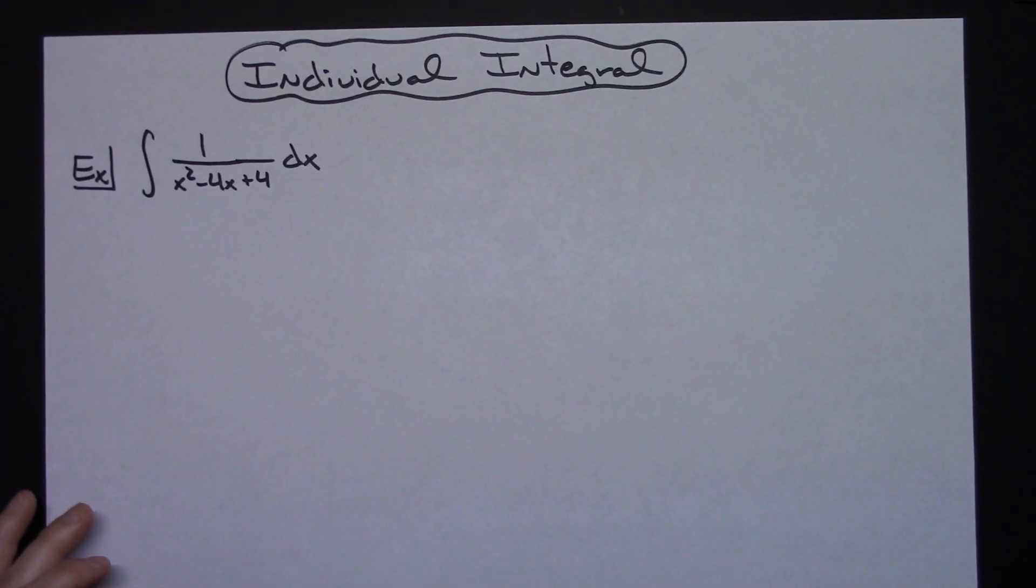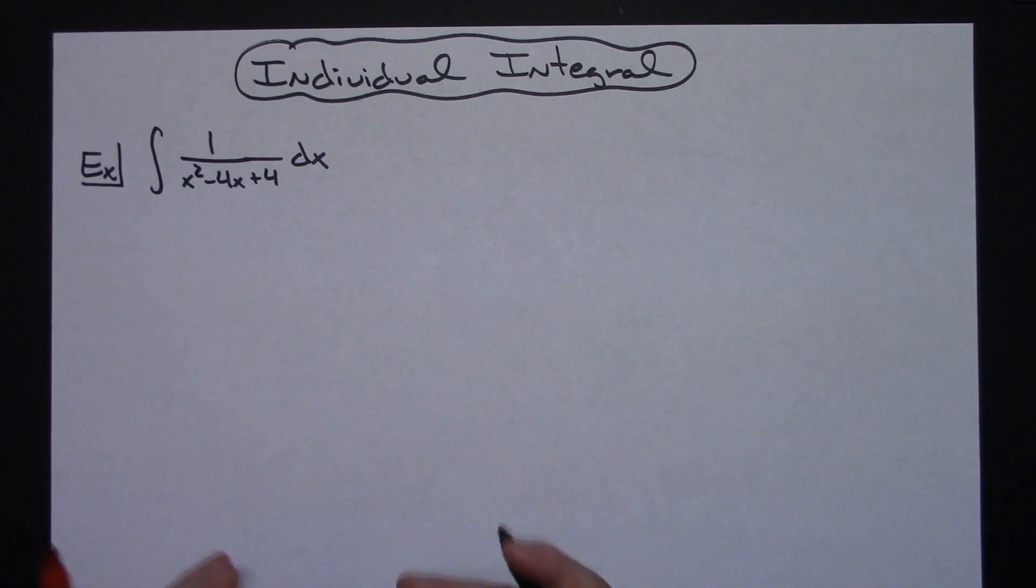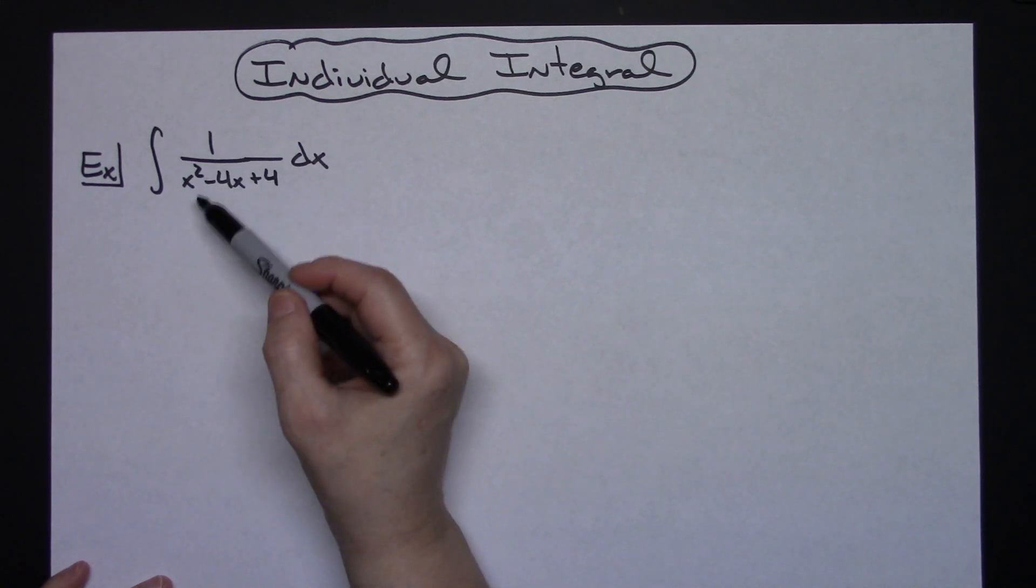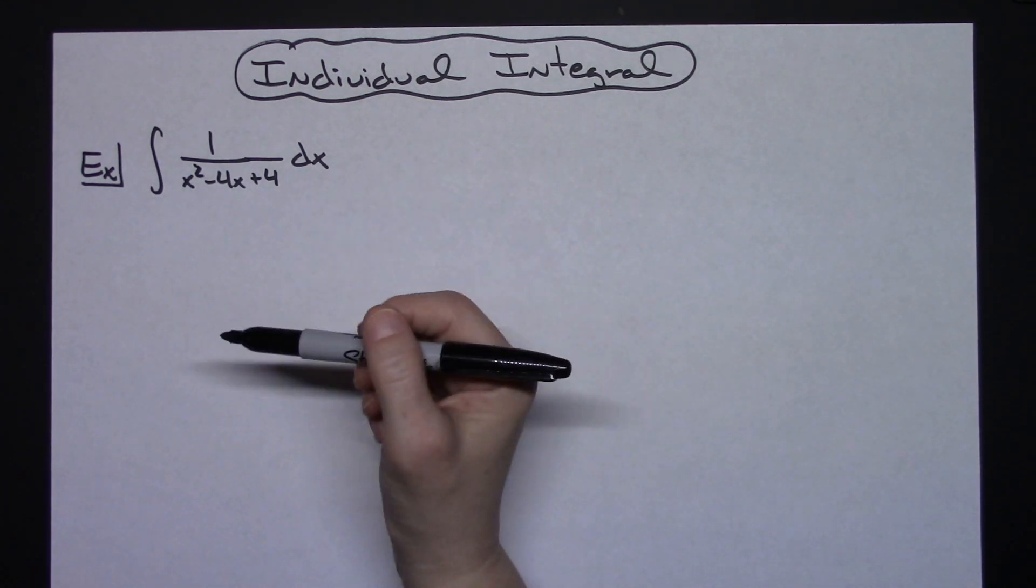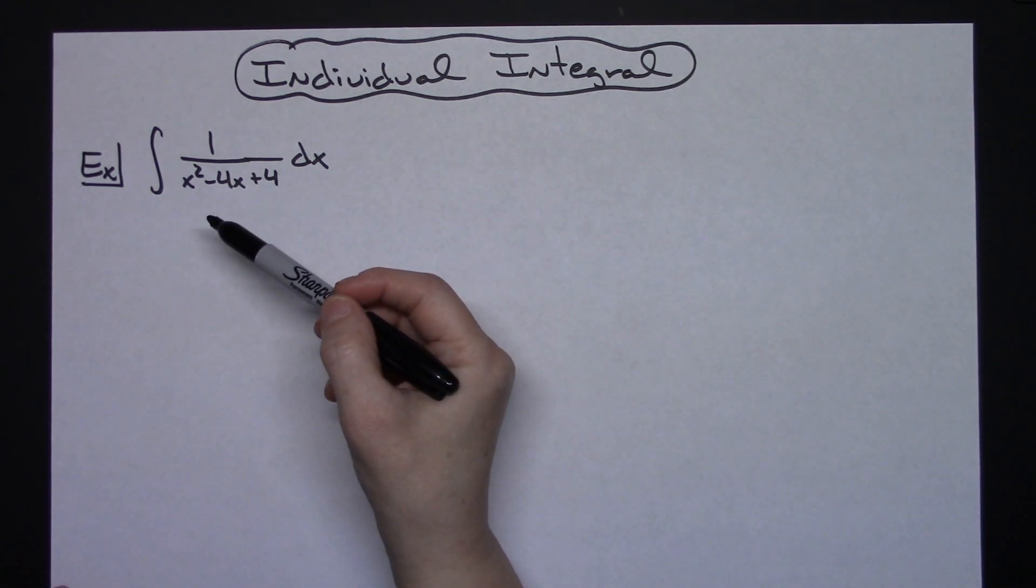In this video, I'm going to do an integral problem typically found in a Calc 1 class. However, it's an approach where u-substitution isn't going to work initially, so you'll have to come up with another approach. Here's the problem: integral of 1 over x squared minus 4x plus 4 dx. Clearly, a u-substitution is not going to work because I can't find something where, if I take the derivative, it's going to cross out.